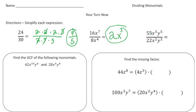This one: 55 divided by 22 — I can rewrite that as 5 halves. Then x to the third divided by x squared gives x with one left over. And y to the fifth divided by y cubed — subtract the powers — that's y squared.